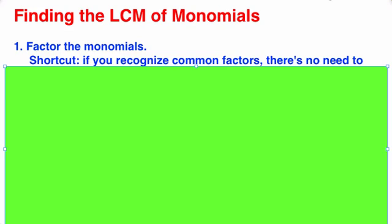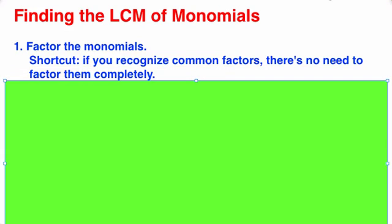The first step is to factor the monomials. You don't necessarily have to factor them completely if you can recognize common factors. If you don't recognize common factors, it's actually best to take them all the way down to their prime factorization.